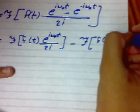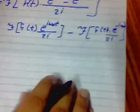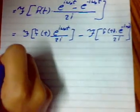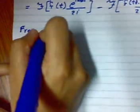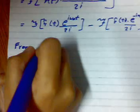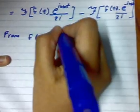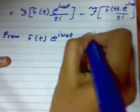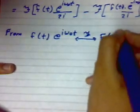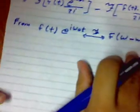By the properties of Fourier transform, this property of frequency shifting: f of t multiplied by exponential i omega naught t equals F of omega minus omega naught. This property we will use to get this.